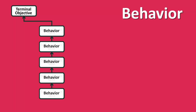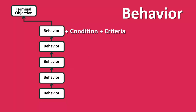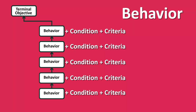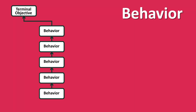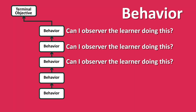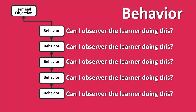Now your task in the design phase is to add a condition and an assessment to the behavior. When looking at behaviors, you need to ask yourself: can I observe the learner doing this? If the answer is yes — which is often easy for psychomotor skills — then you're going to provide conditions and criteria for the behavior.